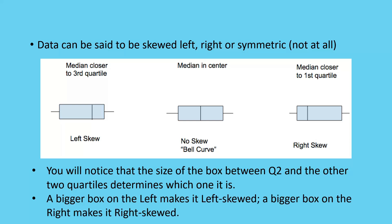The bigger the box is on the left makes it, if the bigger box is on the left-hand side, it's left skewed. If the bigger box is on the right-hand side, then it's right skewed.